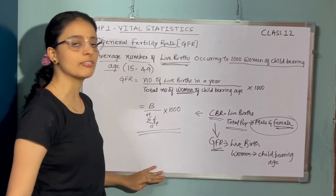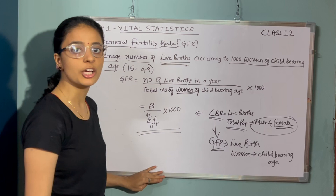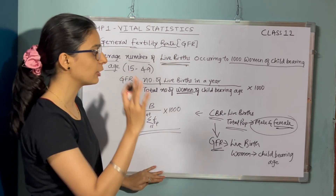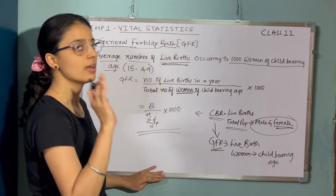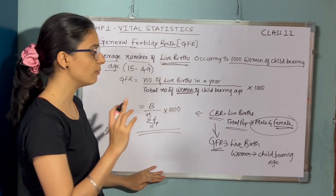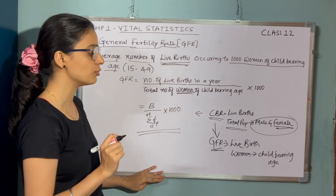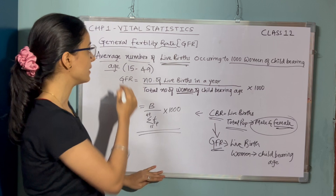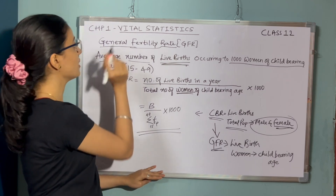It can be written as B divided by the summation of female population from 15 to 49 years, into 1000. Make note of this formula and we will be looking into the problems related to GFR.